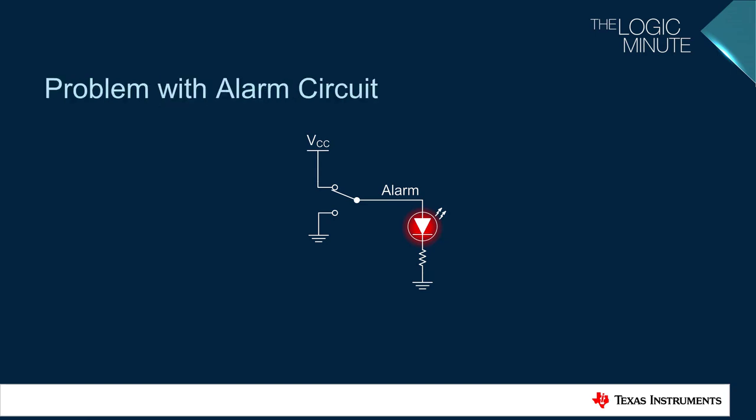There is a potential problem with the current alarm circuit. Whenever the trigger disappears, the LED turns off. If you are feeding the alarm circuit into an MCU, it may not be able to address the event before the signal disappears. This would be like your home alarm going off when the door opens and then turning off when the door is closed. This is a huge issue since these alarm circuits are used in critical situations and it is important that the event is addressed.